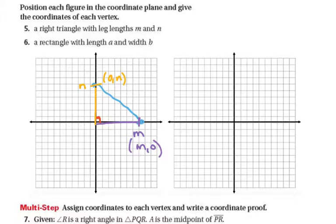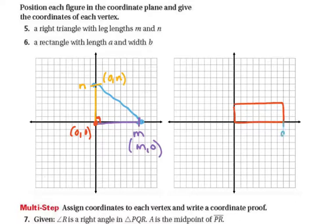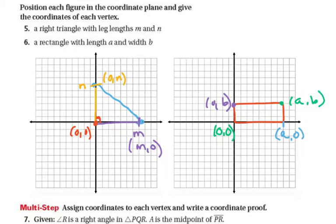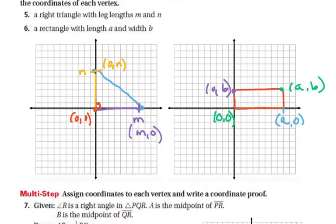The next one wants a rectangle, and of course it needs to be at the origin. We want a length of A, so the coordinate along the x-axis is (A, 0). Going over none but up B for our width gives us (0, B). The origin is (0, 0). Then the far corner has gone over A and up B, so the coordinate there is (A, B). Again, without counting squares, because that's not what they're looking for.